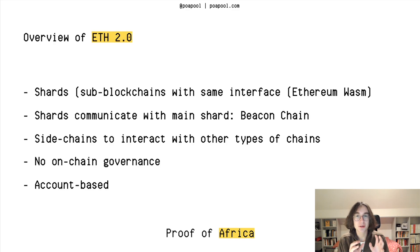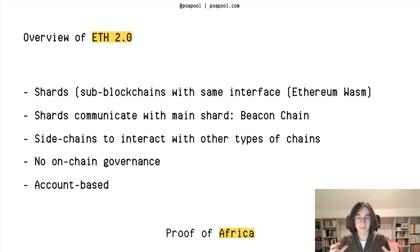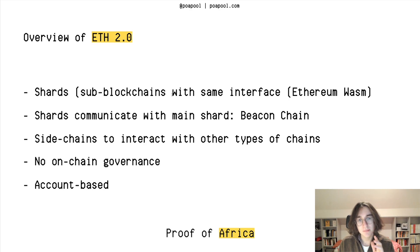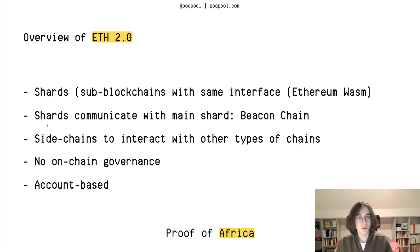Ethereum 2.0 is made of shards. A shard is basically a technical term for a sub-blockchain, so you have to see Ethereum as a blockchain made of blockchains — kind of like a tree essentially. What's very important to note is that these sub-blockchains all need to have the same interface, meaning the same way of executing smart contracts. All these shards communicate with the main sub-blockchain, which is the beacon chain.